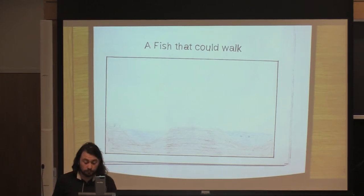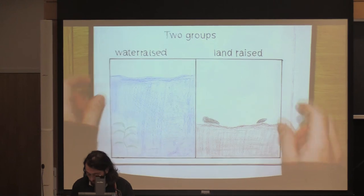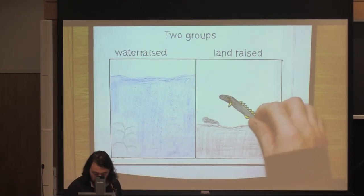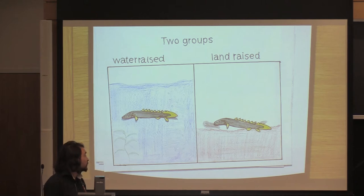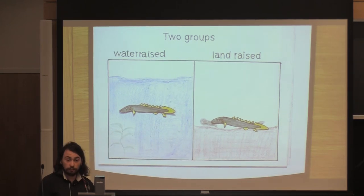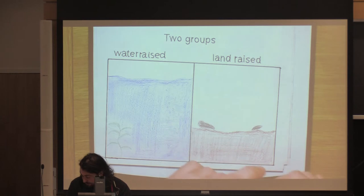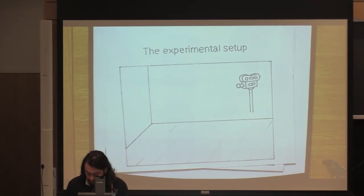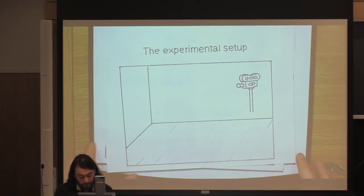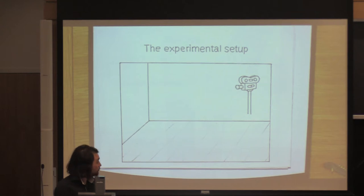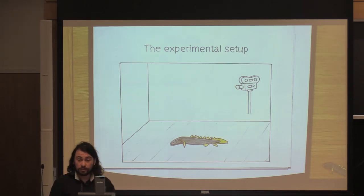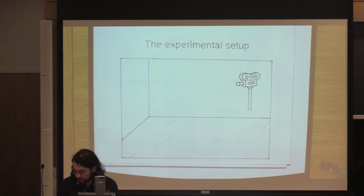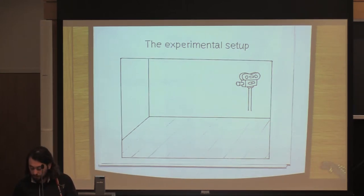The authors decided to take 150 fish that they bought at 70 days old and raised about 100 on land and 50 in water. Using those two groups of fish, they looked at the phenotypic plasticity induced by being on land or being in water. Their experimental setup was that they took fish from the land-raised group and the water group, put them in a room with cameras, and looked at the motion and the kinematics of the fish.